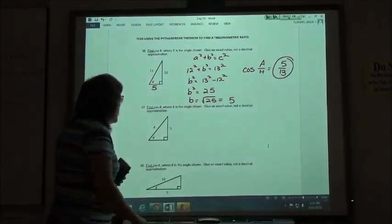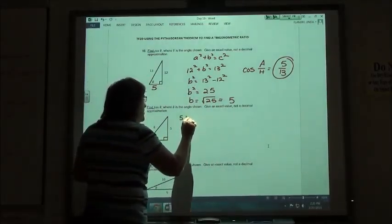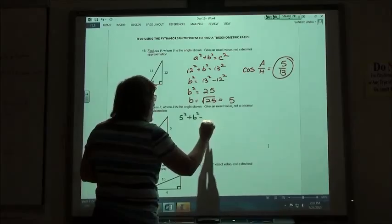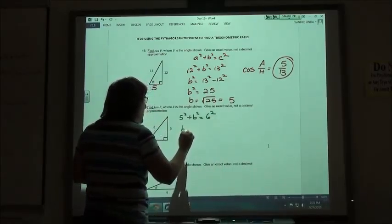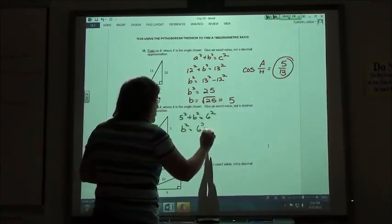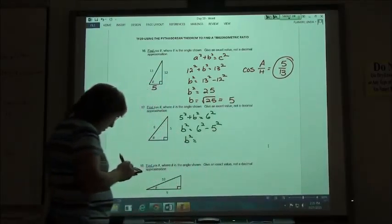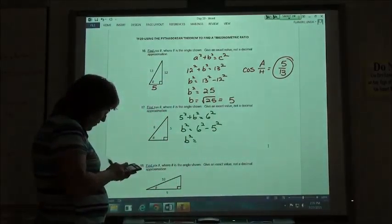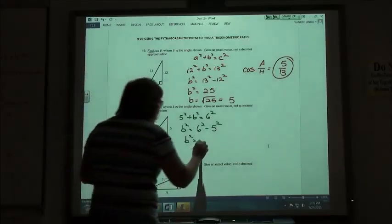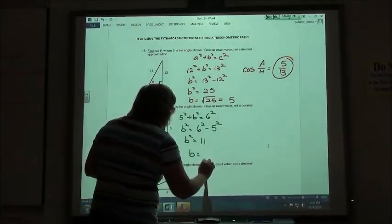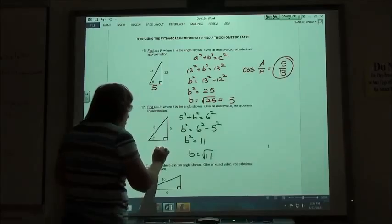The next one, 5 squared plus B squared equals 6 squared. So B squared is going to equal 6 squared minus 5 squared. 6 squared minus 5 squared is going to give me 11. So B is going to equal the square root of 11. Can't do much with that.